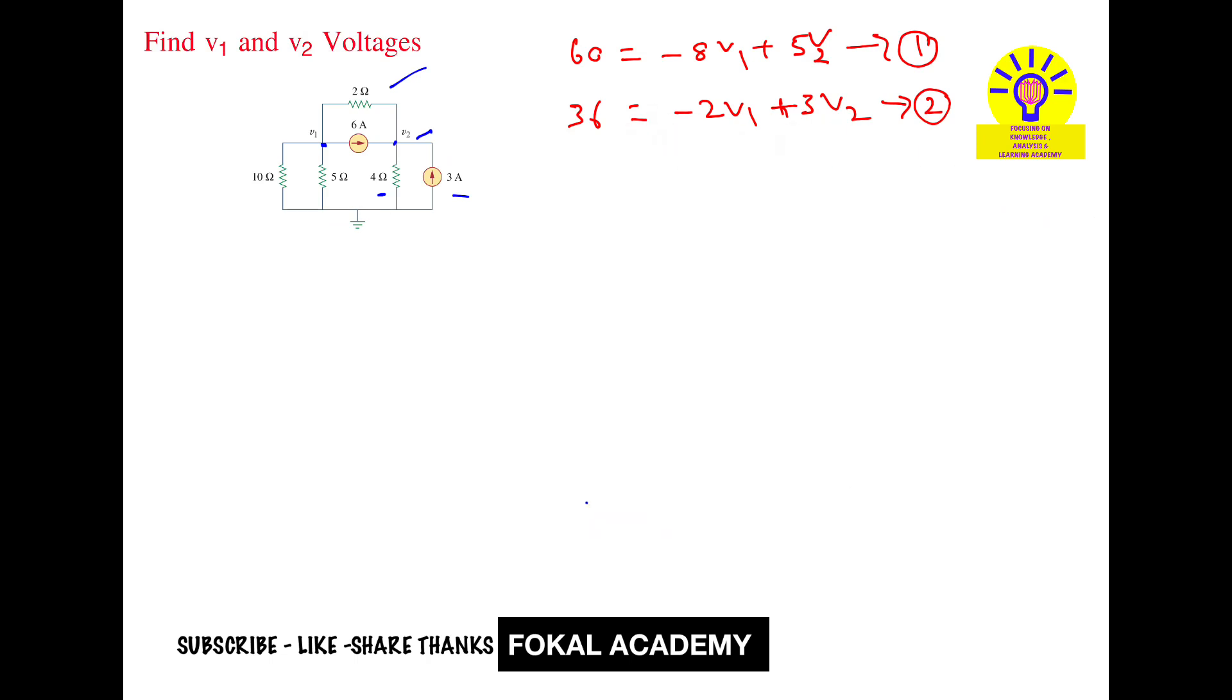To simplify: keep equation 1 as 60 equals minus 8v1 plus 5v2. For the second equation, make the v1 coefficient minus 8 by multiplying by 4: 144 equals minus 8v1 plus 12v2.